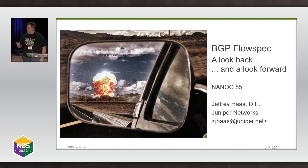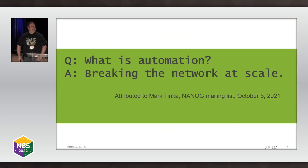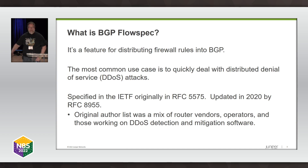Our little picture here shows a rear view mirror with explosions in the background, and this is just a thing that is true for FlowSpec. FlowSpec causes a lot of pain. Pulling a bit of wisdom off the NANOG list: what is automation? It's breaking the network at scale. It's really hard to do truly evil things to your network without a little bit of help. So, just a reminder: what is BGP FlowSpec? It's a feature that's there to distribute firewalls into BGP. I repeat that — firewalls into BGP. The most important use case for it is mitigating denial of service. It's incredibly helpful, used by a large number of people across the internet and various service providers of gigantic to small size, making successful use of it to actually mitigate denial of service issues.